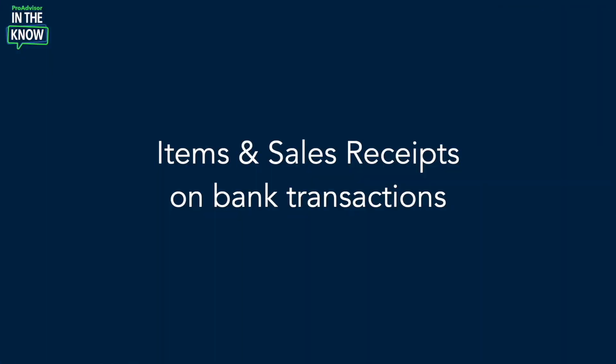We heard that you have to spend lots of time adding transactions from the bank feed and then going back to fix them later, because the bank feed hasn't historically allowed for adding items like products or services to transactions. So here's what we've done. On money out transactions, you can now add products or services — also known as items — to your expense transactions directly from the bank feed. And on money in transactions, you can now record transactions as sales receipts directly from the bank feed.